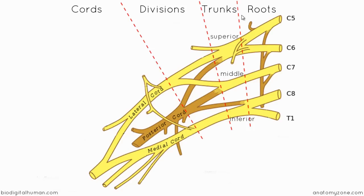A useful mnemonic: think of a tree — it starts from the roots and then you have the trunk. So the roots are the first part of the brachial plexus, then the trunks. A tree then divides, giving you the divisions — the anterior and posterior divisions after the trunks. Then you just have to remember the cords at the end: the lateral, posterior, and medial cords.